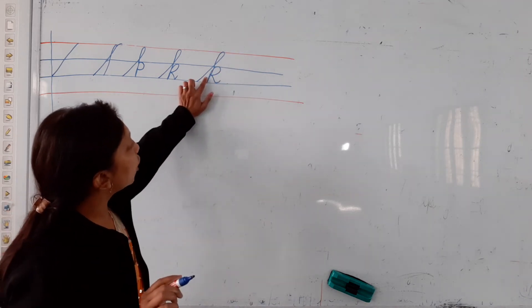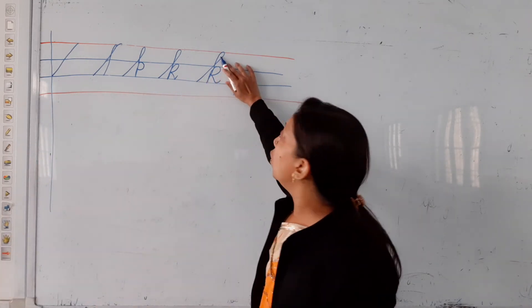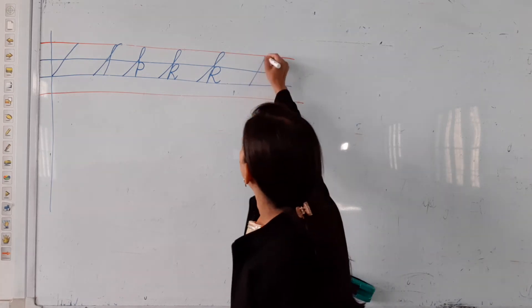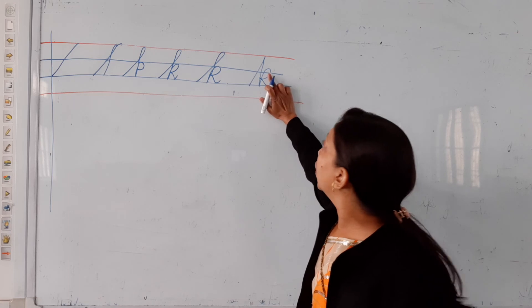There should not be much gap. There should not be much gap and there should be a loop also. If you like this, this is wrong. And here is the curve which doesn't go up.